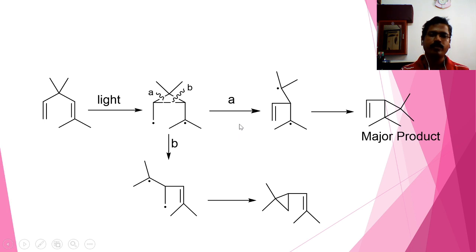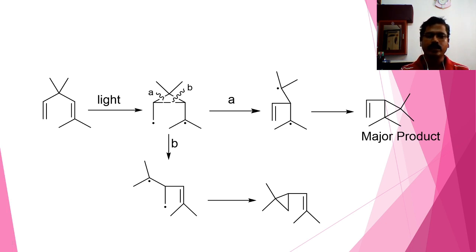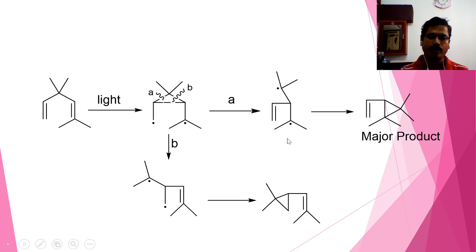In order to find out which of these two would take place, we have to compare the stability of the diradicals that are formed. In pathway A, this diradical has a tertiary free radical and this is also a tertiary free radical. Whereas in pathway B, one is a tertiary free radical and the other one is primary. So certainly pathway A is more stable, and hence the reaction would take place according to A.